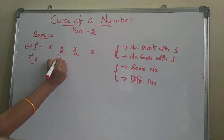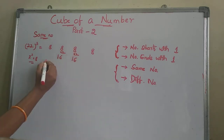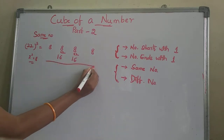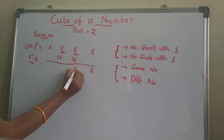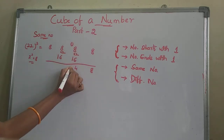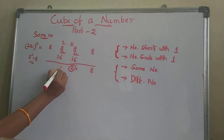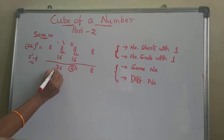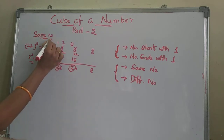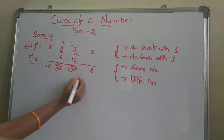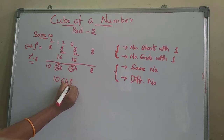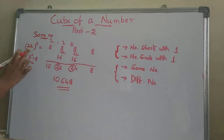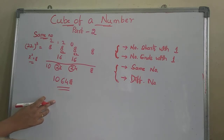8 becomes 16. Write 16 for the middle two positions. After that, we can add all these. 8, that is 14 — take this 1 as a carry, giving 2. For this 24, take this 2 as a carry. For this 26, take this 2 as a carry. The remaining numbers are 1, 0, 6, 4, 8. So 22 cube is 10648.